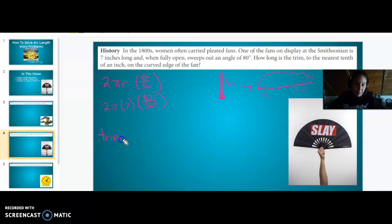So trim equals 2 times 7 times π times 80 over 360. This can all get shoved into a calculator, times 80 divided by 360. What do we want, to the nearest tenth? So this would be 9.8 inches. Once you get your stuff plugged in, your calculator can do the rest of the work. Always work smarter, not harder.